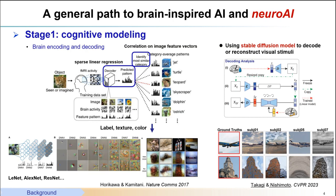Here we propose a general path to neural AI. The first stage is to build computational models of brain cognition, specifically focusing on brain encoding and decoding. For instance, we record brain activity using fMRI under specific tasks and use a deep neural network model to extract features from the stimuli. We can find strong association between neural activity and DNN representations, which can be used for brain decoding or even reconstructions of visual stimuli. When replacing it with state-of-the-art DNN models such as a stable diffusion model, the image reconstruction meets high image standards and full image details, as shown in the CVPR 2023 paper.